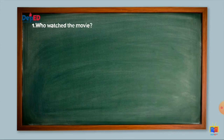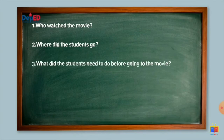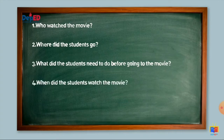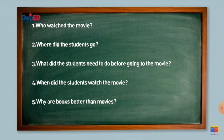Now here are the questions. Number one: Who watched the movie? Number two: Where did the students go? Number three: What did the students need to do before going to the movie? Number four: When did the students watch the movie? Number five: Why are books better than movies?